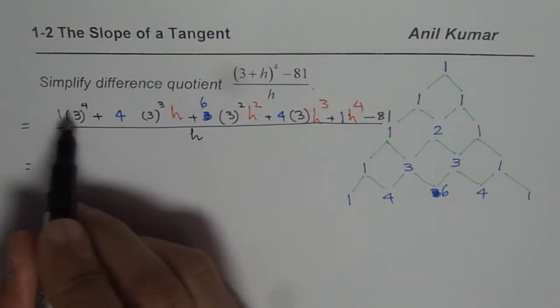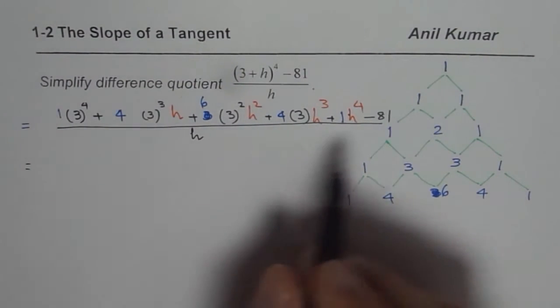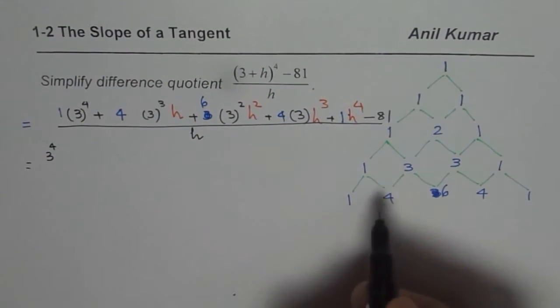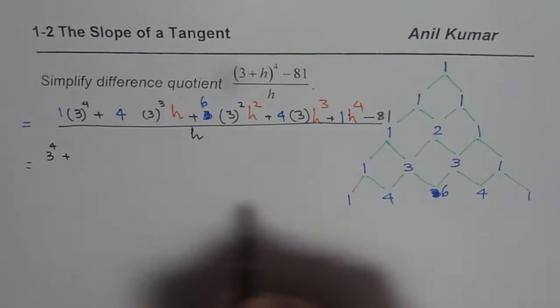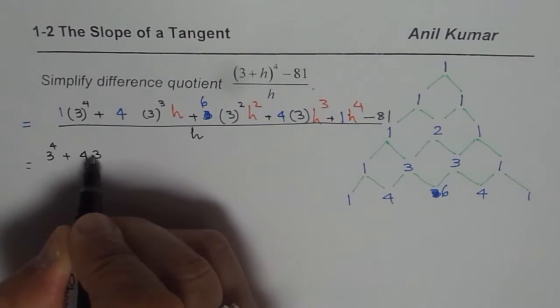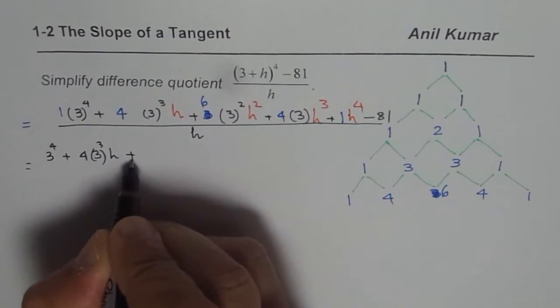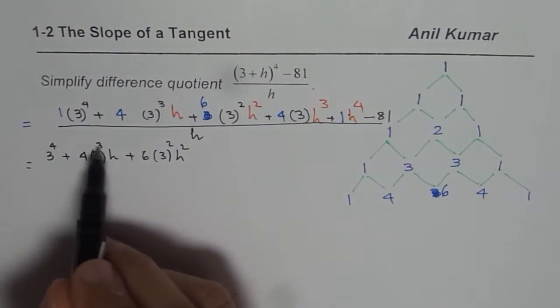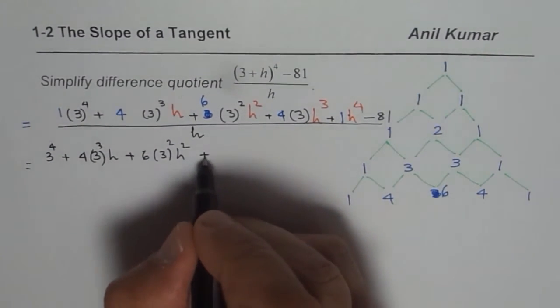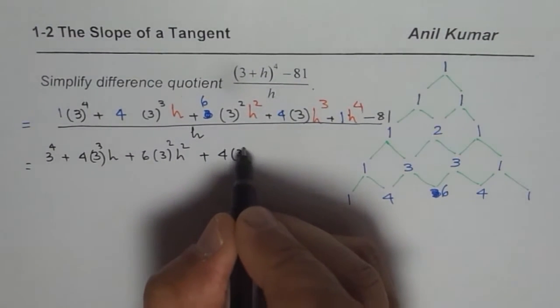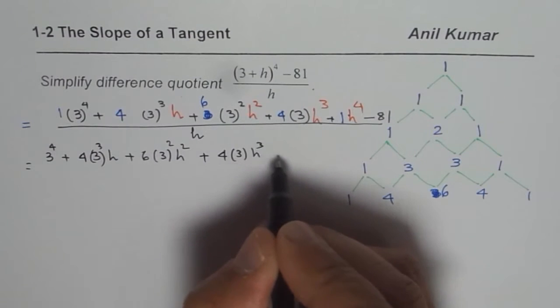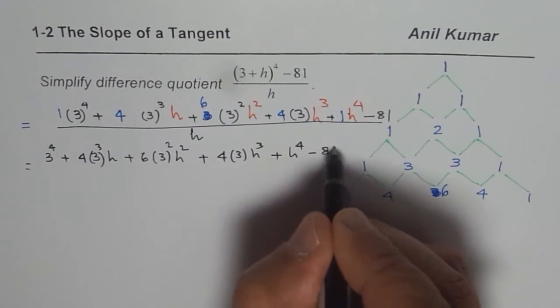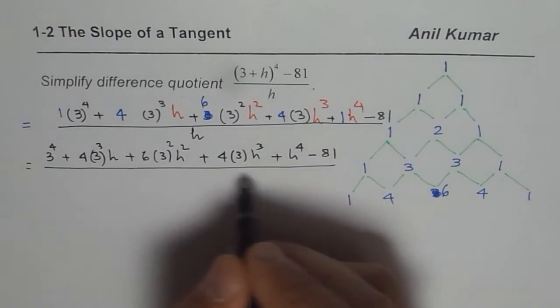So let's combine all these terms now. So we get 1 times 3 to the power of 4 times h to the power of 0, plus 4 times 3 cubed h, plus 6 times 3 squared h squared, plus 4 times 3 to the power of 1 h cubed, plus 1 times 3 to the power of 0 h to the power of 4 minus 81. So I just rewrote everything, divided by h.